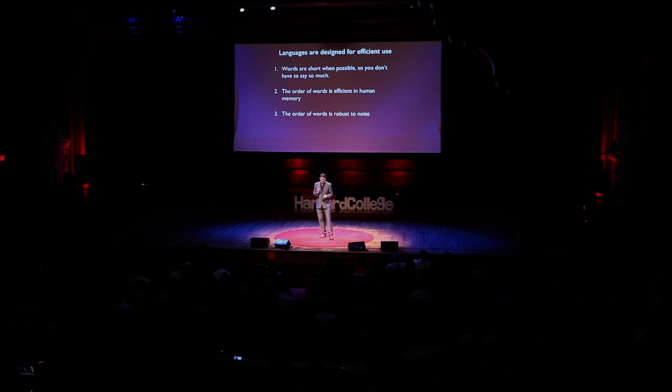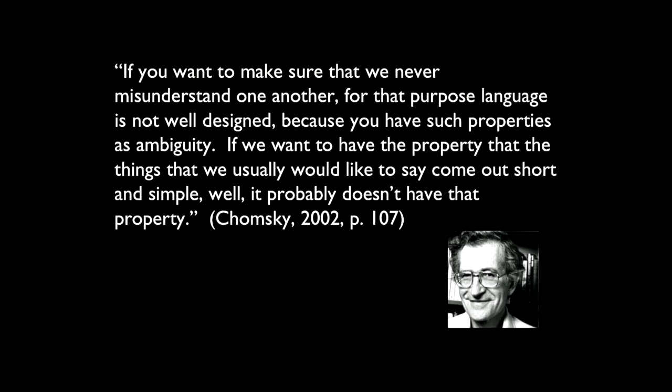The most famous linguist, Noam Chomsky, says: 'If you want to make sure that we never misunderstand one another, for that purpose language is not well designed, because you have such properties as ambiguity. If we want to have the property that things we'd like to say would come out short and simple, well, it probably doesn't have that property.'